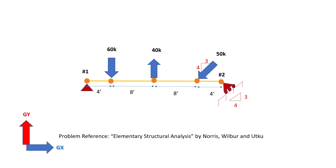Just a quick recap on the problem that we had solved last time. This is a simply supported beam where node number one was supported by a pin support and node number two was supported by a roller support. The specialty of this roller support is that it is on a plane inclined to the horizontal at a slope of three vertical to four horizontal. The loads acting on the beam are a 160 kip load downward, a 40 kip load upward, and a 50 kip inclined load at a slope of three horizontal to four vertical.